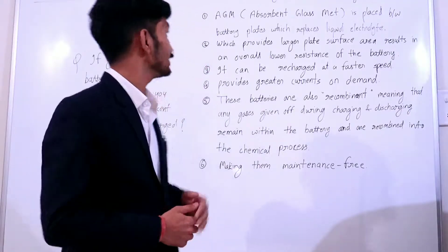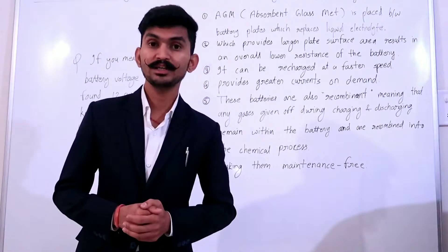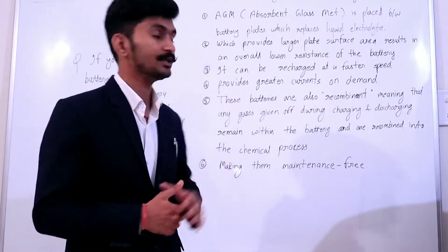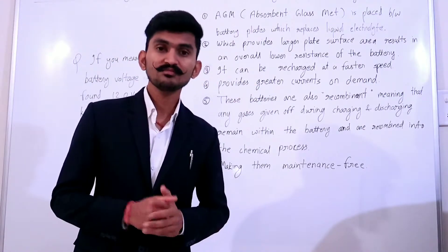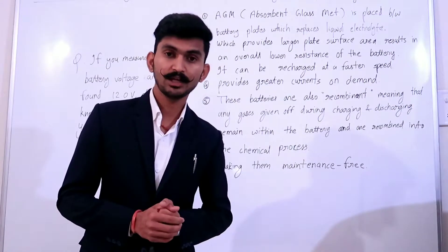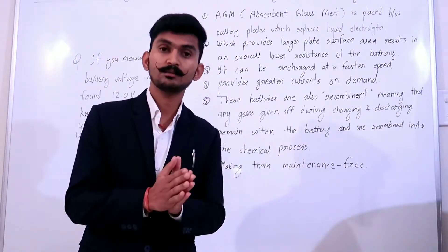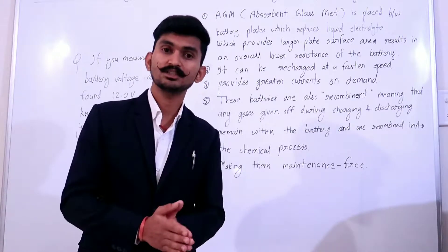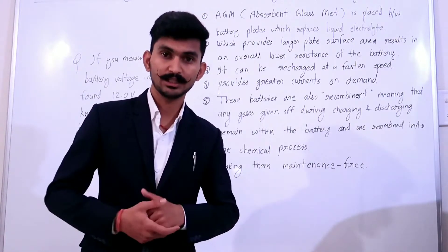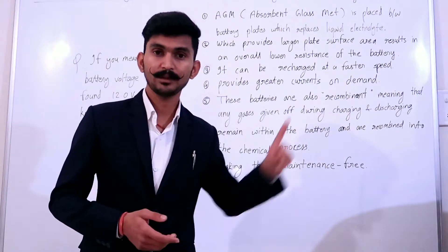First point is AGM - Absorbent Glass Mat - is placed between battery plates which replaces liquid electrolyte. In the video of battery construction, I told you that the plates are in the form of a grid and underneath it is a porous insulator and electrolyte is filled. You can see the video here on the eye button.